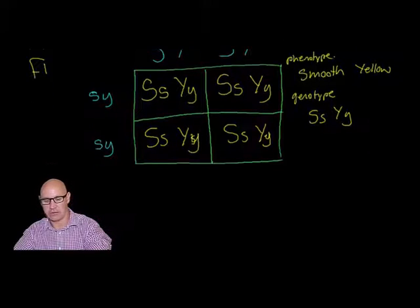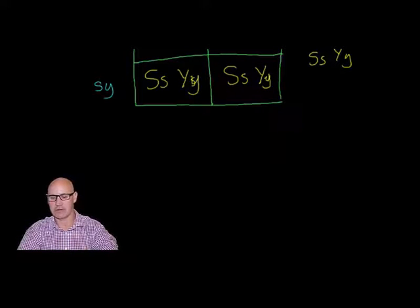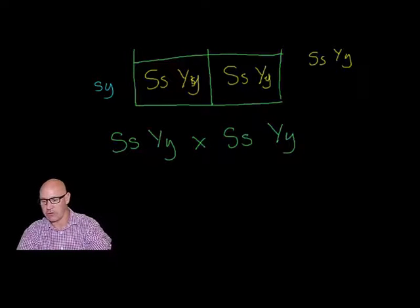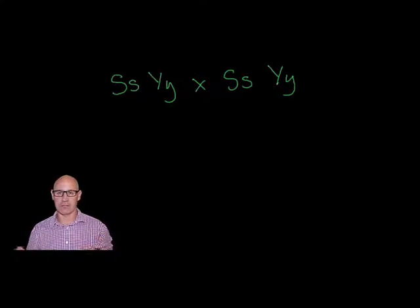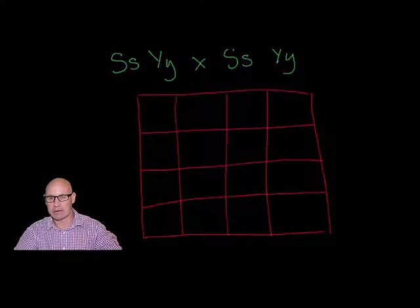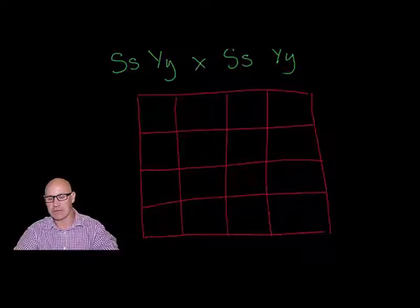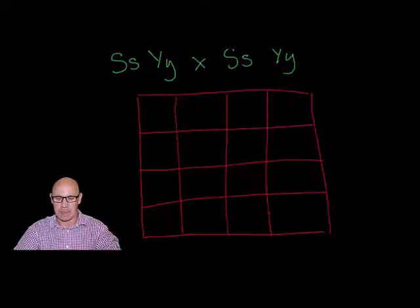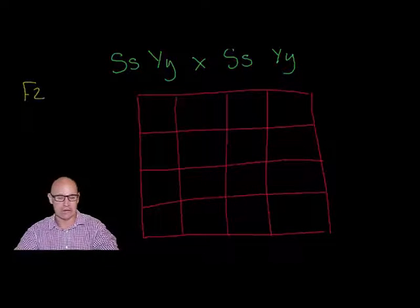Now we're going to do an F2 cross by crossing two of these F1 offspring: SsYy crossed with SsYy. The Punnett square this time needs to be more complex because there are a number of different allele combinations. This is what our Punnett square looks like for a dihybrid cross — it's a 4×4 grid where we need to write the possible allele combinations above each column and row.